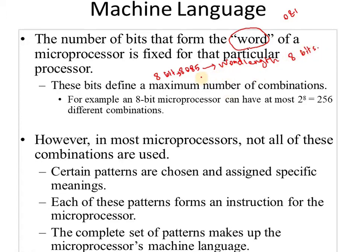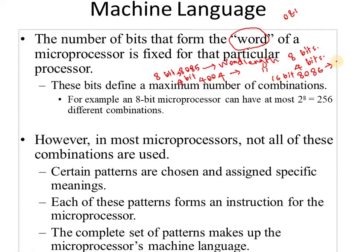Our first microprocessor, the 4004, is a 4-bit microprocessor, so its word length is 4 bits. We will also learn the 8086 microprocessor, which is a 16-bit microprocessor, so the word length for the 8086 is 16 bits.